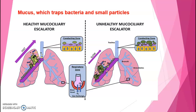Mucus traps bacteria and small particles in the nasal cavity. Hair and mucus trap small particles, viruses, bacteria, dust, and dirt to prevent their entry. If particles make it beyond the nose or via the mouth, the bronchi and bronchioles contain several protective devices. The lungs also produce macrophages that trap particles.